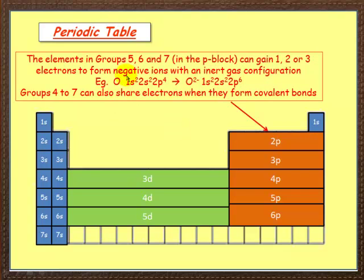We can also say elements in groups 5, 6 and 7, that's the P-block over here, can gain 1, 2 or 3 electrons to form negative ions with inert gas configurations. So oxygen, which is over here, has got 1s2, 2s2, 2p4. To fill this sublevel here, it needs 2 more, doesn't it? It makes 6. And if it gains 2 electrons, as it does here, it gains 2 negative charges. So the ion is O2-. Now group 4 to 7, they can also share electrons to form covalent bonds.